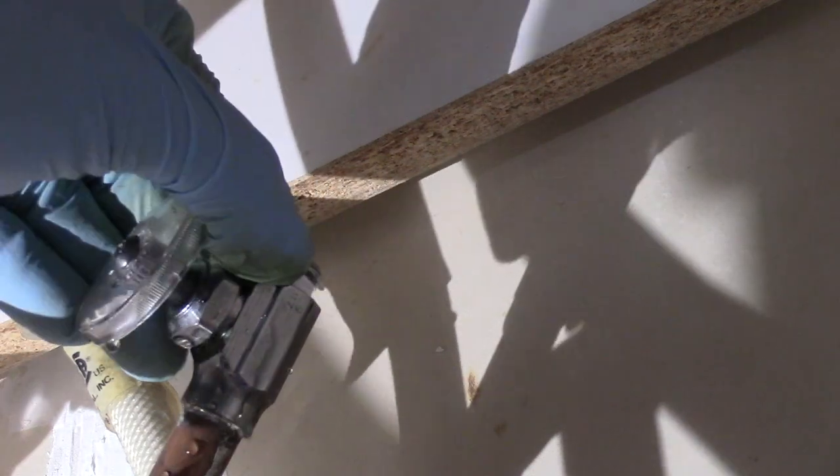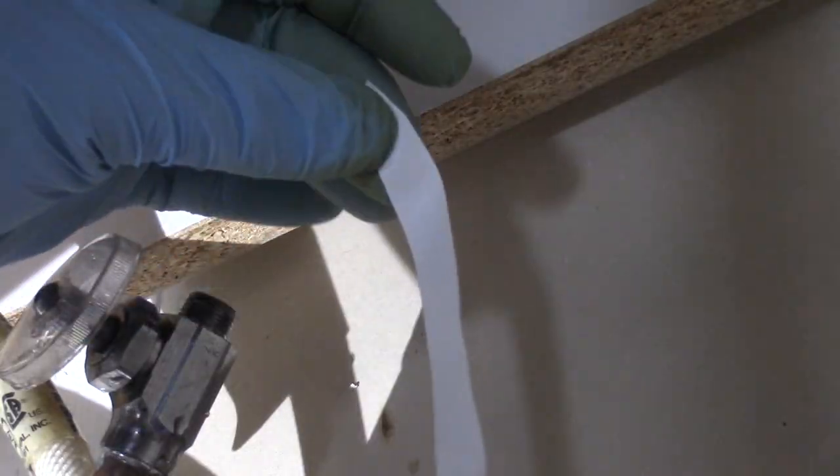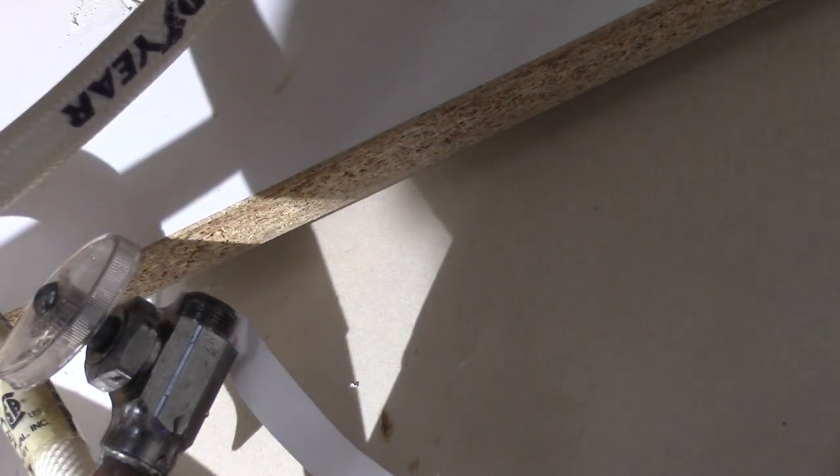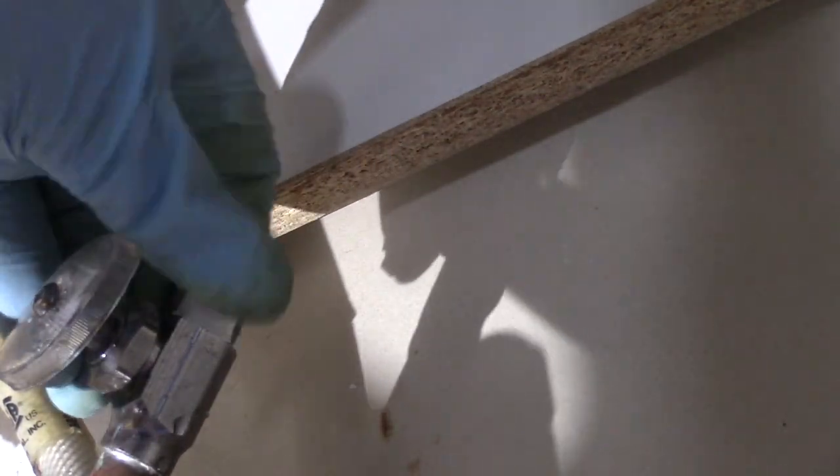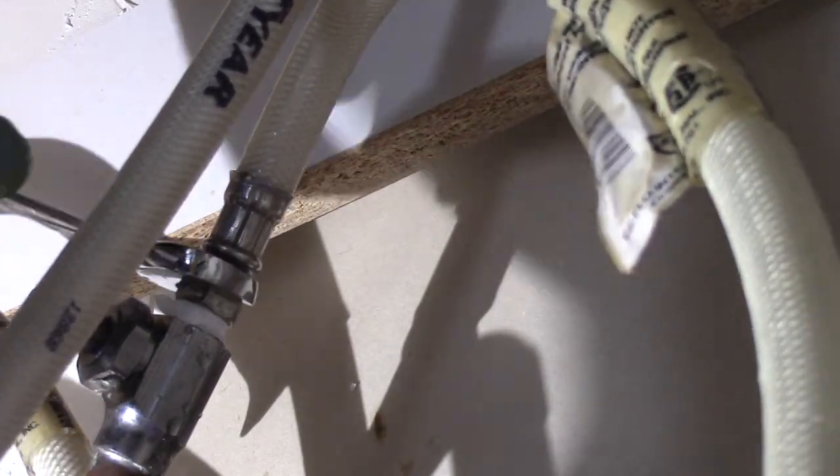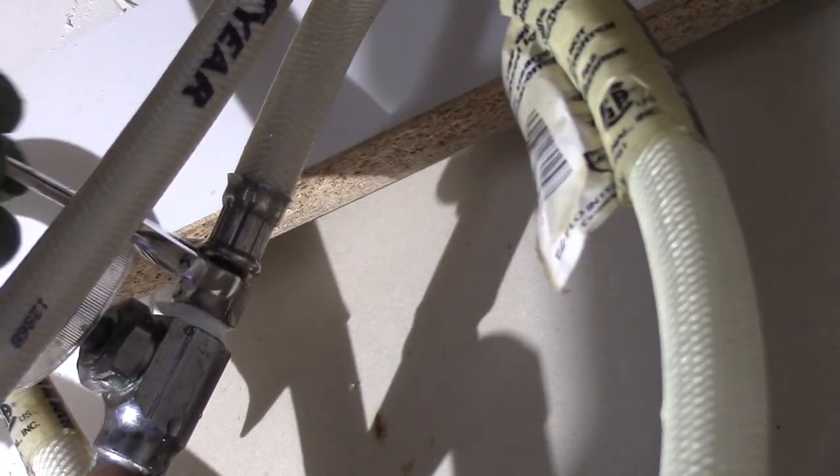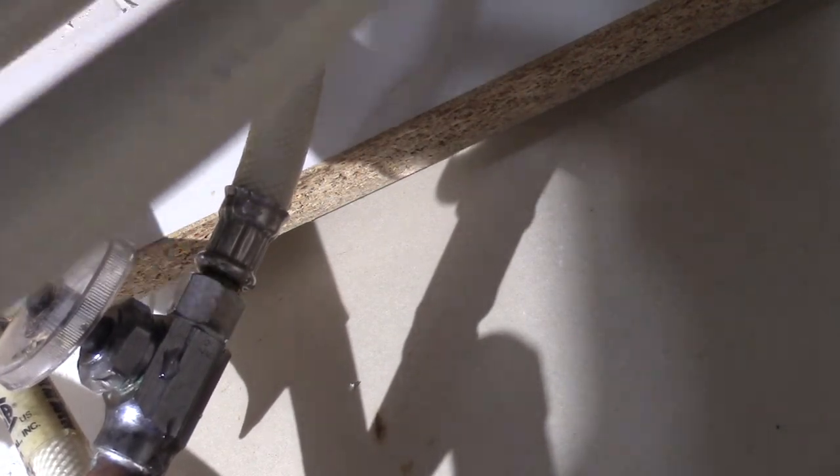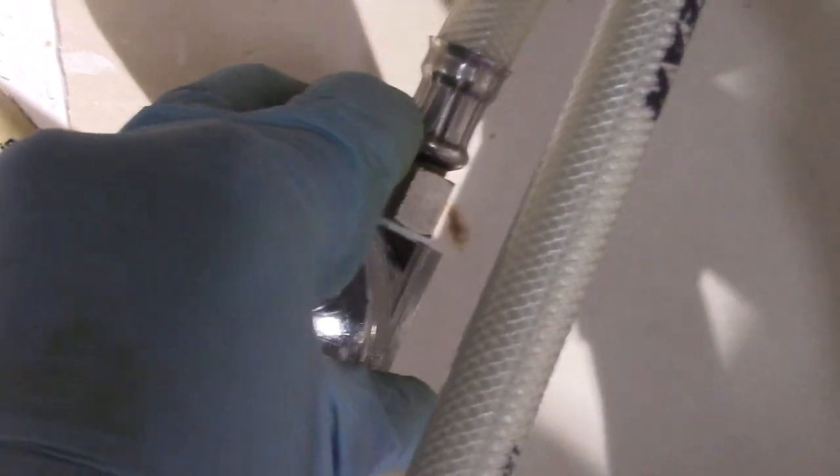We have to remove the old Teflon tape and install new Teflon tape. Remember to wrap it clockwise, the same way you would tighten the nut, righty tighty. Hand start the nut and then tighten it with your wrench. Then open up our cold shut off valve. So far so good.